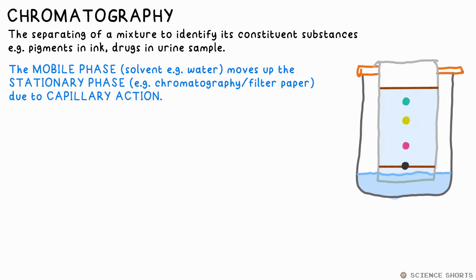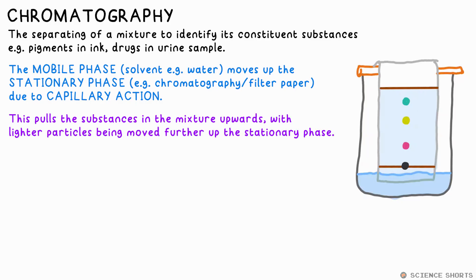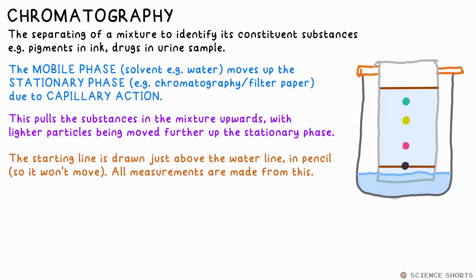We draw the line at the bottom in pencil so it doesn't move with the mobile phase, the water. Then at the end of the process we measure how far the mobile phase has moved and also how far the substances have moved. These are both measured from the starting line.